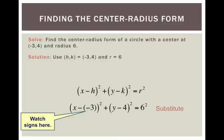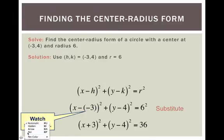Is this the final answer? No, we can simplify this a little bit. Since I have x minus negative 3, I can change that to x plus 3, all squared. I have y minus 4 squared, and we can do 6 squared, which is 36. That is our final answer simplified.